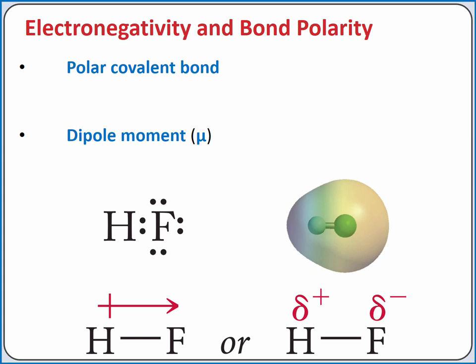This can create a dipole moment, which is the separation of the center of positive and negative charge in a molecule. If we look at HF, for example, the fluorine and hydrogen atoms are sharing two electrons in a single bond, but the two electrons spend more time near the fluorine than the hydrogen atom.